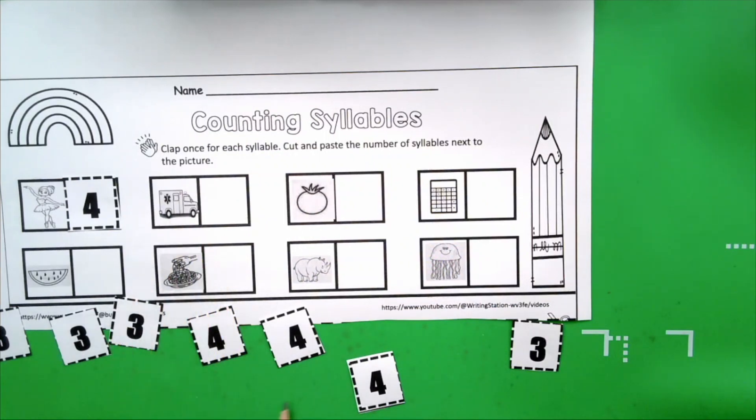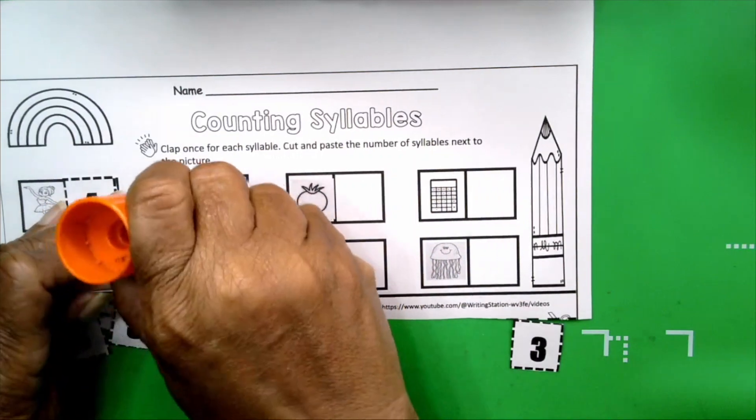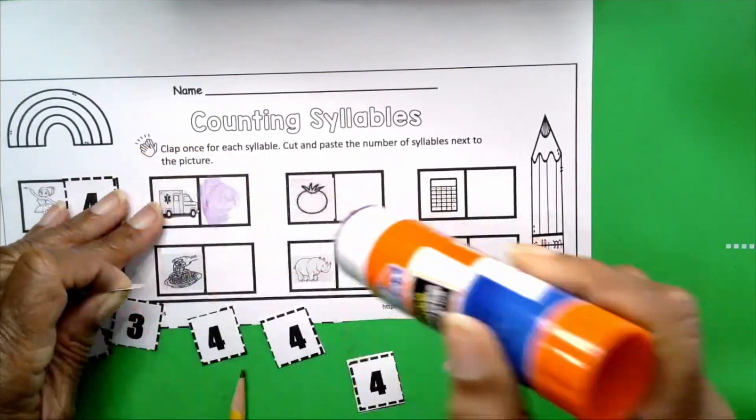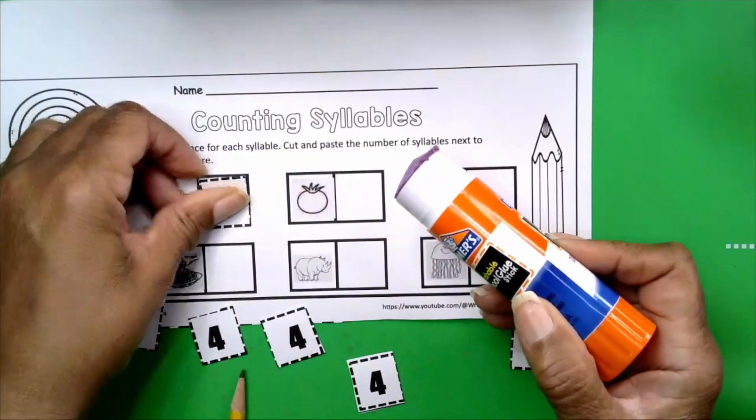Ambulance. Say it. Ambulance. Get your hands ready. Ambulance. How many claps? Three. How many syllables in the word ambulance? Three. Very good. Three claps. Three syllables. Four claps equals four syllables.